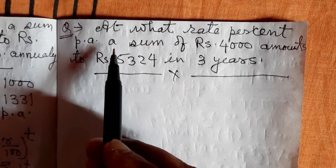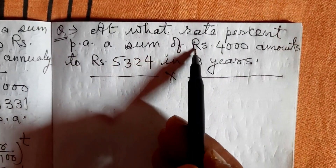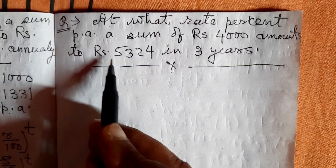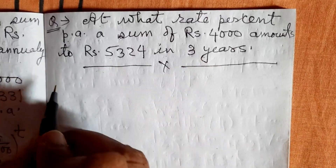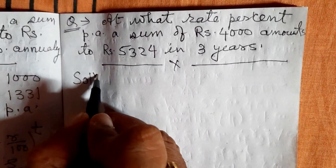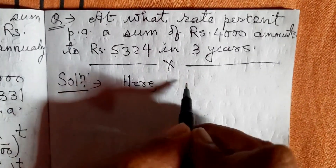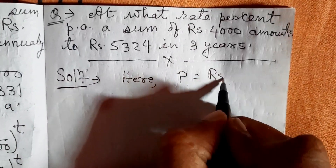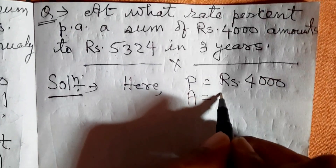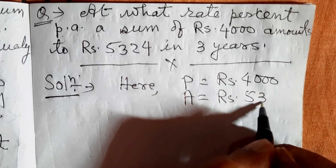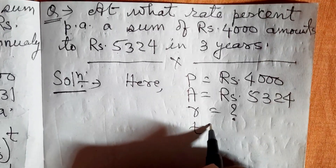Very important question for annual examination. At what rate per cent per annum, a sum of rupees 4000 amounts to rupees 5324 in 3 years? Here, P is equal to rupees 4000, A is equal to rupees 5324, R is equal to what, T is equal to 3 years.